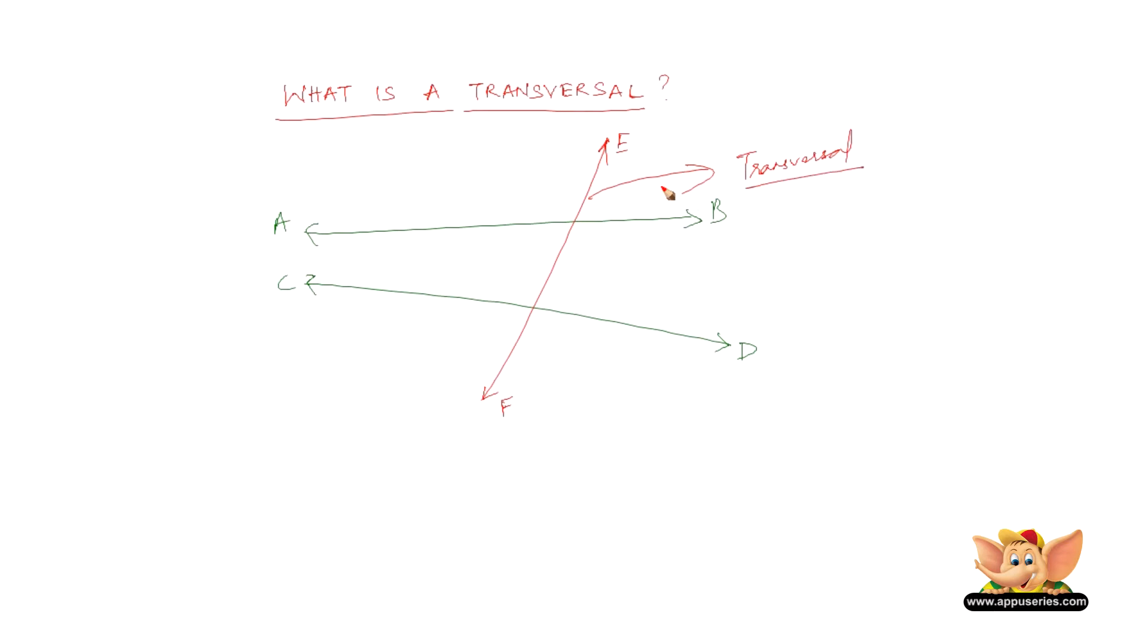Now apart from intersecting, during intersecting, what transversal does is it also creates a lot of angles here. It almost creates eight angles.